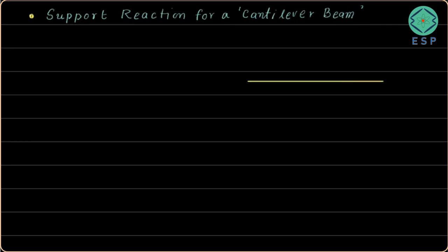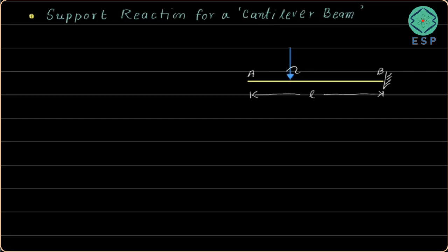We have got this cantilever beam here. This end is point A and this end is point B, and point B is basically the fixed end — it has been fixed with a rigid support. The length of the cantilever beam is L units, from here to here. A point load P is acting at point C, and the distance between point C and point B is distance a.